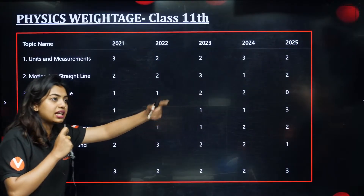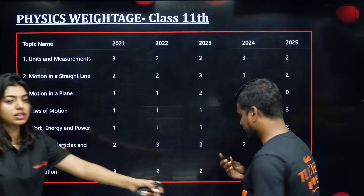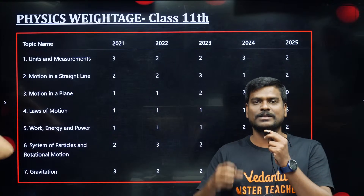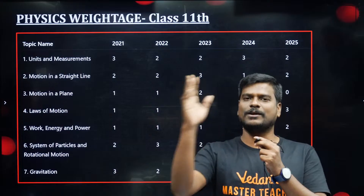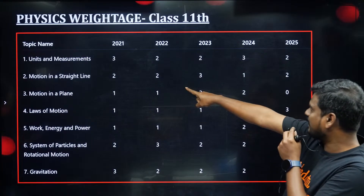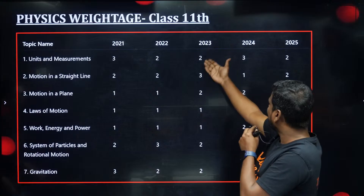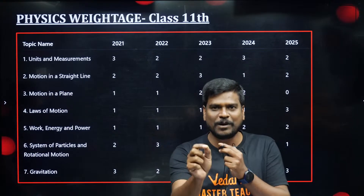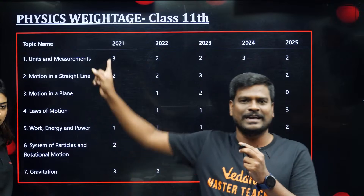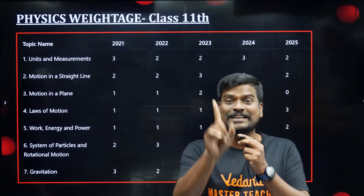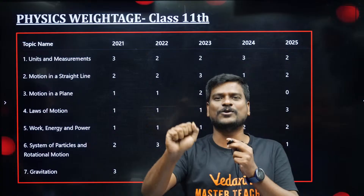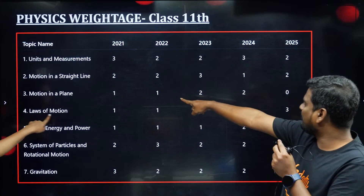Now let's look at the weightage. Looking at the last five years — 2021 to 2025 — which chapters are important. Particularly the first few chapters in 11th standard physics carry high weightage. Let's look at Units and Measurements: 2021 has 3 questions, 2022 has 2, 2023 has 2, 2024 has 3, 2025 has 2. Minimum 2 questions every year. Semiconductors is also an easy chapter with about 3 questions. Together, these two chapters alone can give you 5 easy questions.